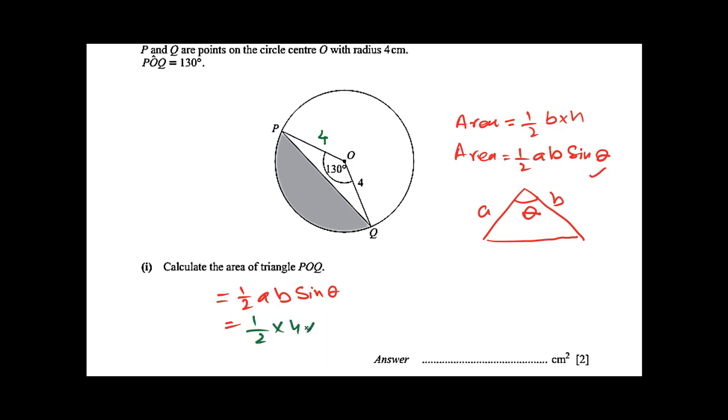So, 1 over 2 times 4 times 4 times sine 130 degrees.